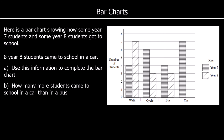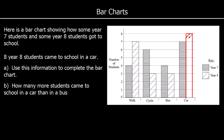Use this information to complete the bar chart. We've got a dual bar chart. For walking, there's a separate bar for year 7 and year 8, and there's a key to show which is which. The missing part is the year 8 students going to school by car — we're told that's 8. So we can draw that bar on. The key says year 8 has to have a diagonal line, so we draw that onto the bar. So that is our bar chart completed.